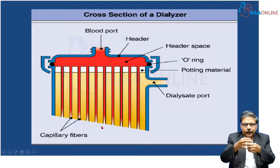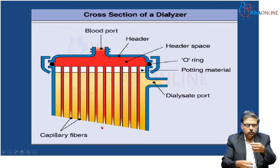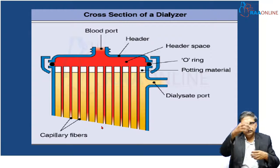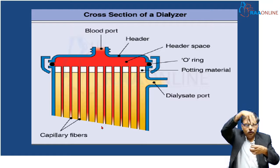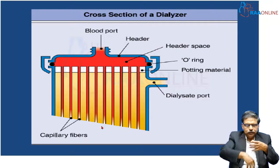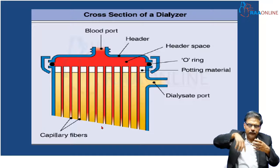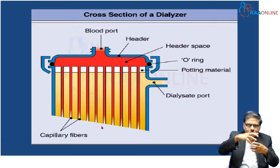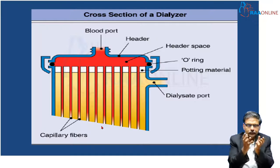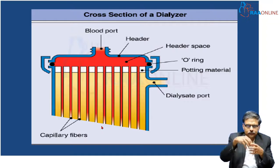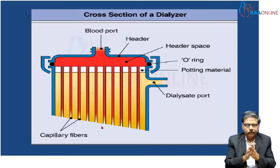The dialyzer is a round structure like a bottle. You have a lot of fibers which carry the blood — the fiber is made of semi-permeable membrane — and surrounding it, you have the dialycate. The dialycate is covering the capillary fibers.